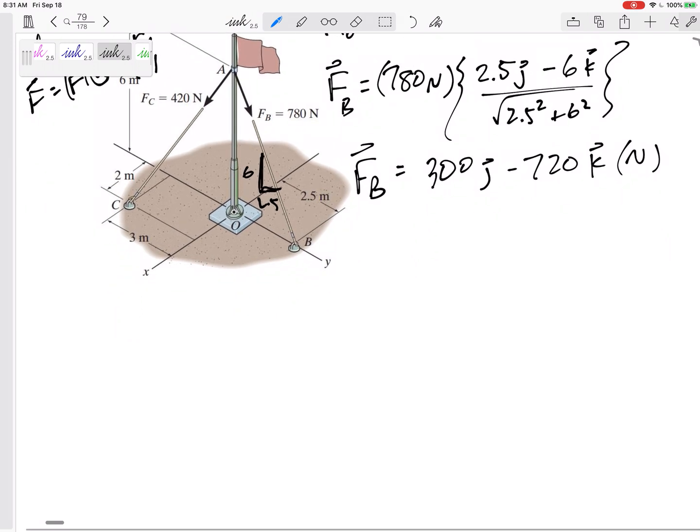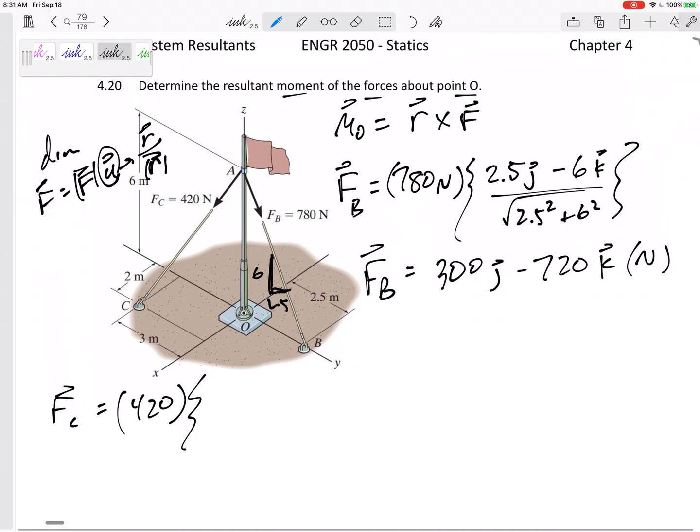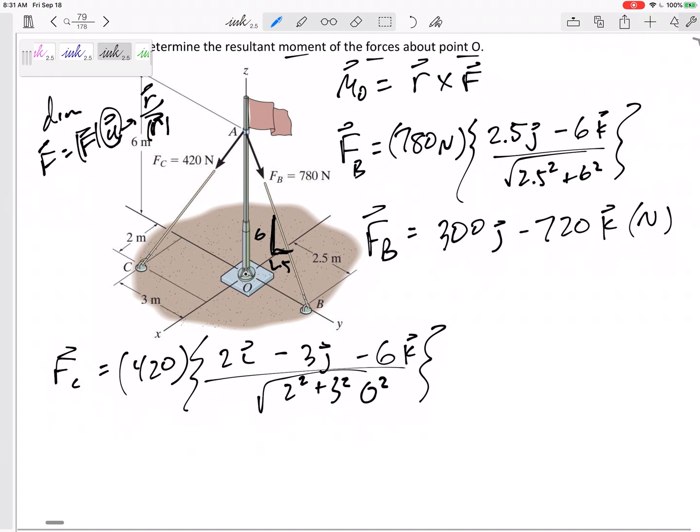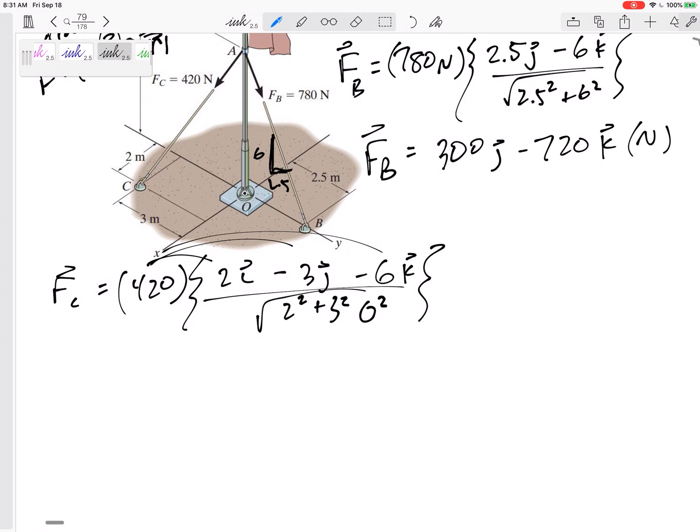All right, put that in my back pocket. Now let me do F_C. So F_C is 420 times its R over R. How far does it go in the X direction? 2 in the I, backwards. 3 in the J, and down 6 in the K, divided by 2 squared, 3 squared, 6 squared. Is that 7? But either way, I would multiply this through and get F_C is 120 in the I minus 180 in the J minus 360 in the K.